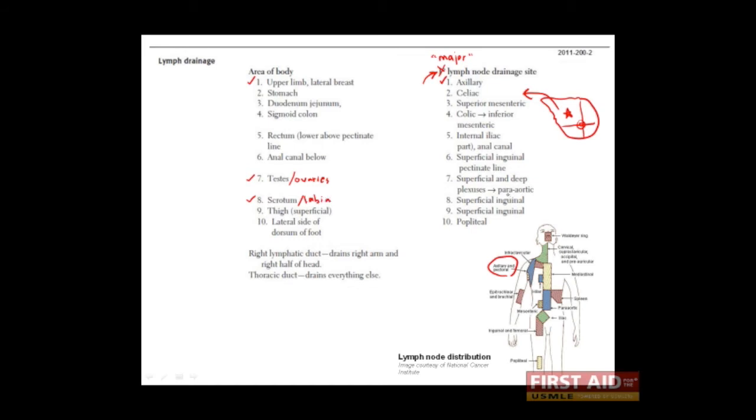Notice that the gonads are actually drained by the para-aortic lymph nodes. These are found close to the aorta and very much near the location from which the gonads descended during embryonic development. Even though the gonads descend, the nodes which drain them actually stay very close to their original location near the aorta.